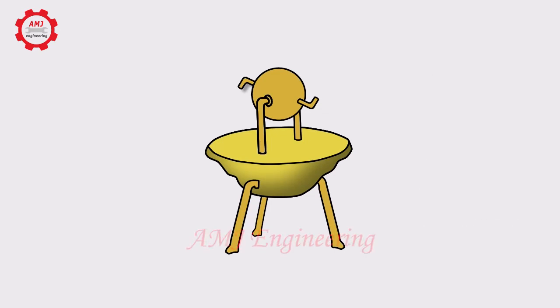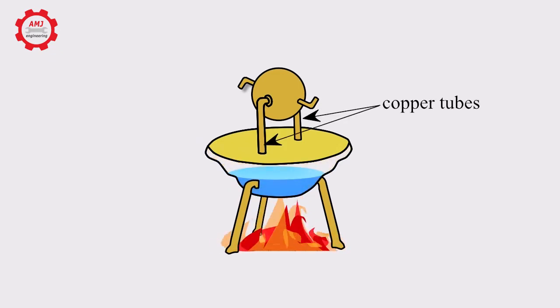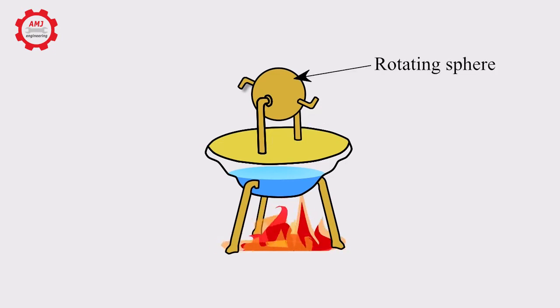His machine consisted of a water reservoir with a heat source located underneath, and two copper tubes extended upwards from this reservoir, acting as the pivot for a rotating sphere.